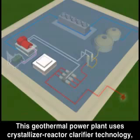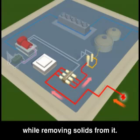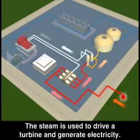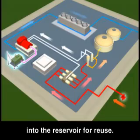This geothermal power plant uses crystallizer reactor clarifier technology, a process that turns the geothermal superheated fluid into steam while removing solids from it. The steam is used to drive a turbine and generate electricity. All remaining geothermal fluids are injected back into the reservoir for reuse.